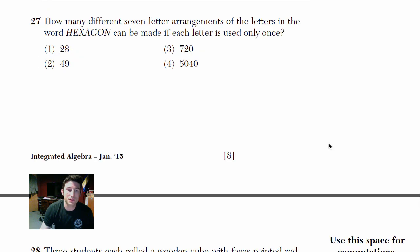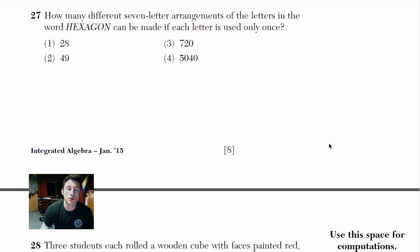How many different 7 letter arrangements of the letters in the word hexagon can be made if each letter is only used once? So I like these questions actually. I think they're kind of interesting. So the way you're going to solve these, you're going to put spots down on the piece of paper. Hexagon has 1, 2, 3, 4, 5, 6, 7 spots. So 1, 2, 3, 4, 5, 6, 7.